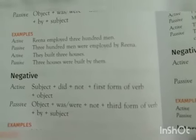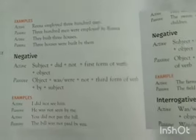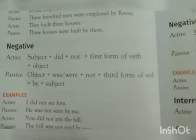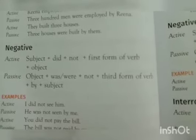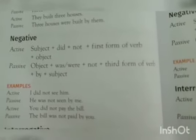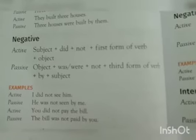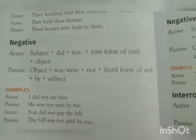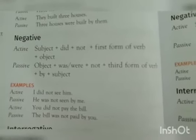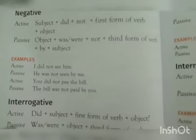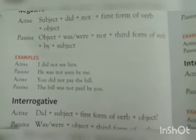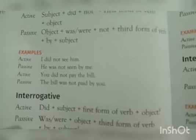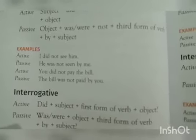For the past indefinite negative, after the subject we have 'did not' followed by the first form of verb and the object. In passive, we have object followed by was or were, depending upon the person, plus not, plus third form of verb, followed by 'by' and the subject. For example: 'I did not see him' becomes 'He was not seen by me.' 'You did not pay the bill' becomes 'The bill was not paid by you.'